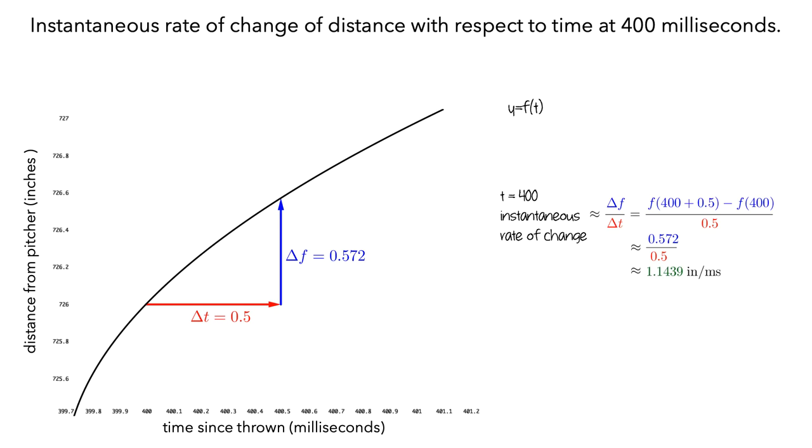On the graph, this value is the same as the slope of the line connecting the point at the beginning of the interval and the point at the end of the interval.